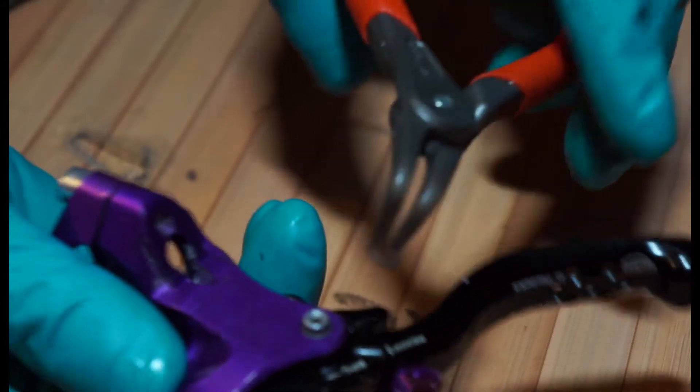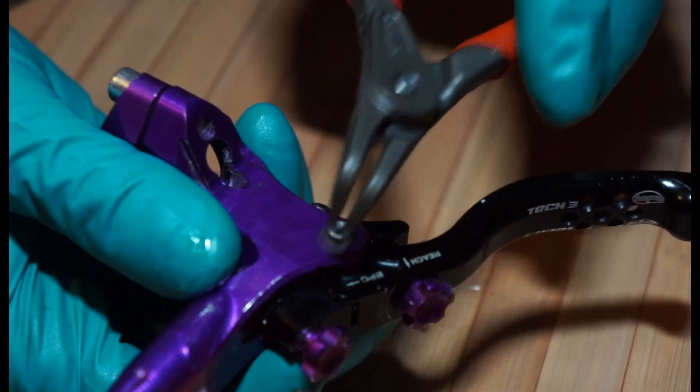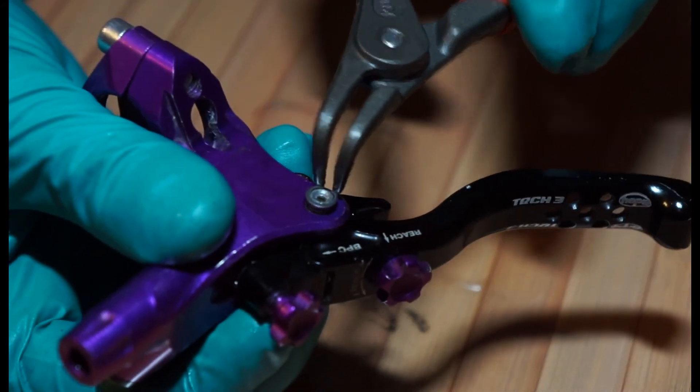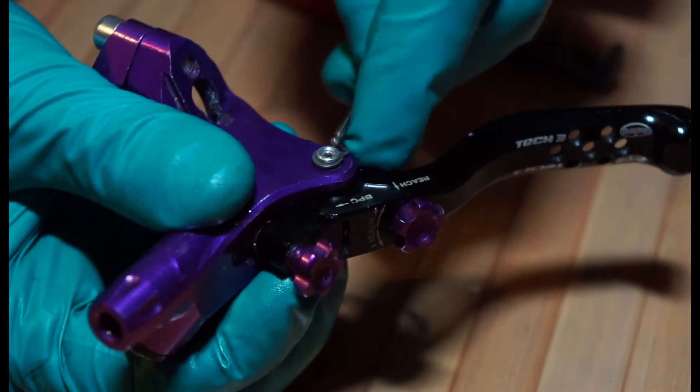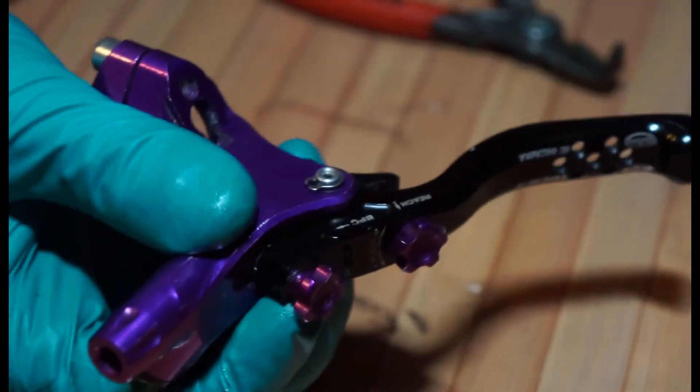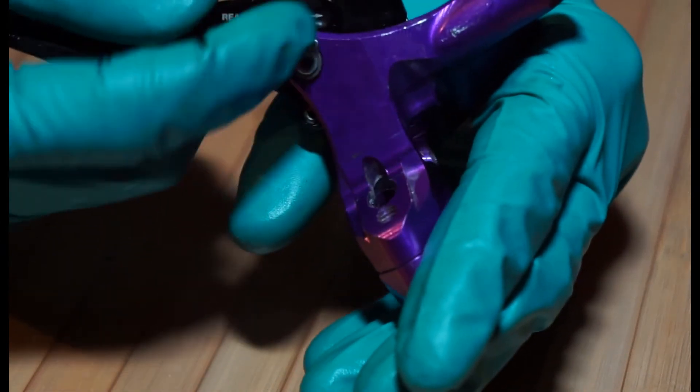We're just going to open it just enough to get it over there. You haven't got to open it like miles. Just a little bit. There we go. Make sure it's pushed on. Seems quite happy. Give the lever a little pull. It's not coming off. So that's nice and happy on there.